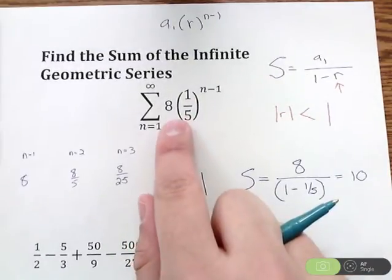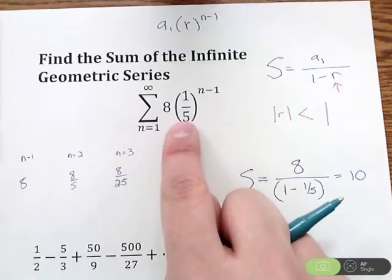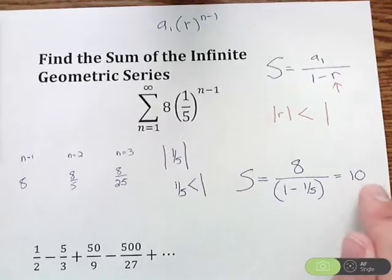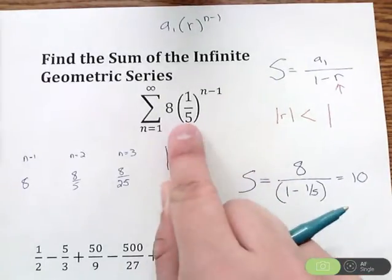When I hit enter, I'm going to find that this sum is 10. So if I was able to write out all the terms and add them all up, the infinite amount of terms, it's going to add up to 10. So the sum of this series is 10.